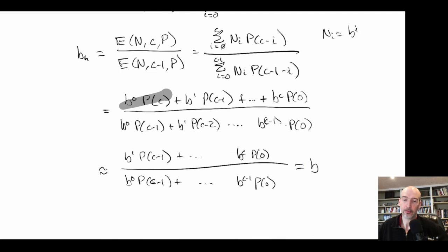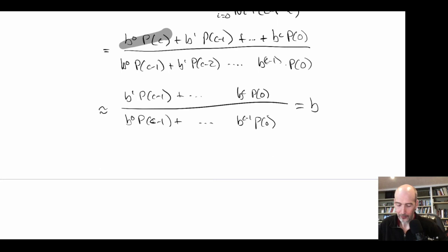Our heuristic is going to reduce our depth and keep the branching factor the same. This works under a certain number of assumptions, which are reasonable for the type of state spaces we look at. So now we know that a heuristic is like doing a shallower breadth-first search. If we had a problem doing B to the D, the branching factor stays the same and the effect is something like B to the D minus K. We can now understand the impact of a heuristic on heuristic search problems.